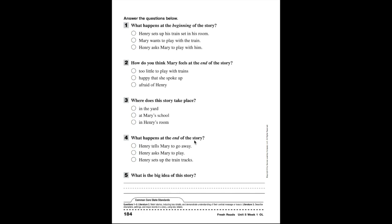Is it A: too little to play with trains, B: happy that she spoke, or C: afraid of Henry? This is helping you remember what the conflict of the story was and the resolution at the end. Number three: where does the story take place?